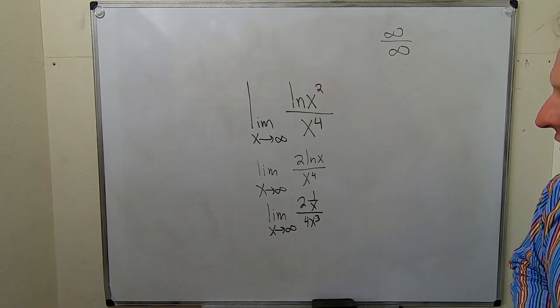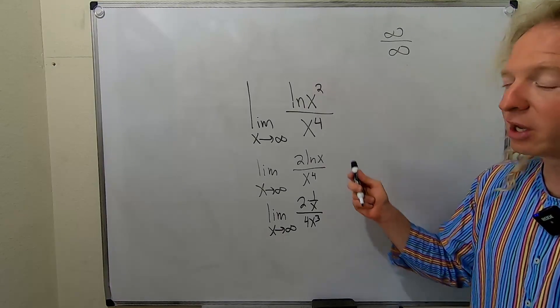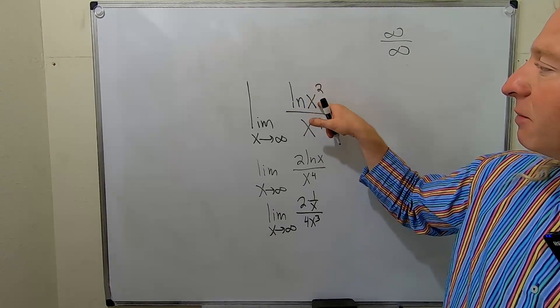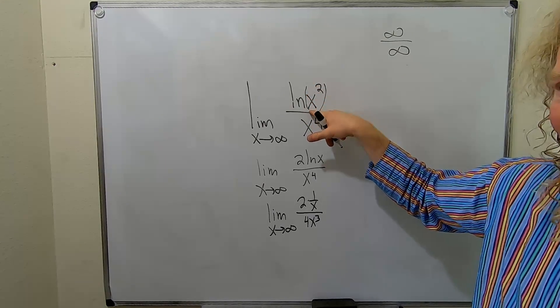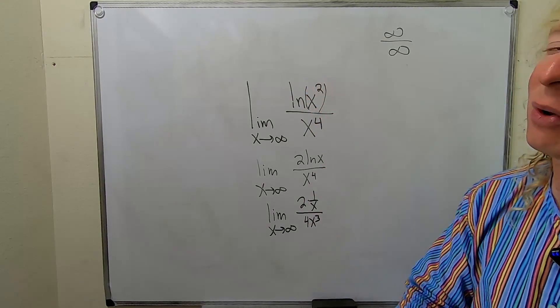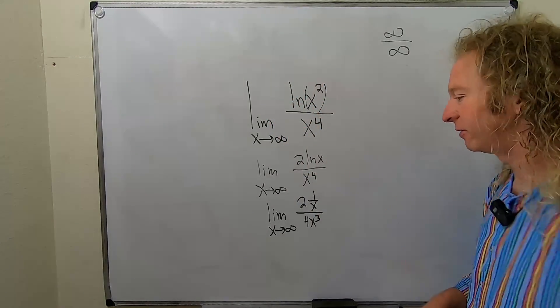Okay. So again, whenever you have infinity over infinity you can just take the derivatives. You could have done that up here as well except that would have required a chain rule because this is in here. It would have been one over x squared times the derivative of x squared. I wanted to avoid that messy stuff so I brought the two down first.